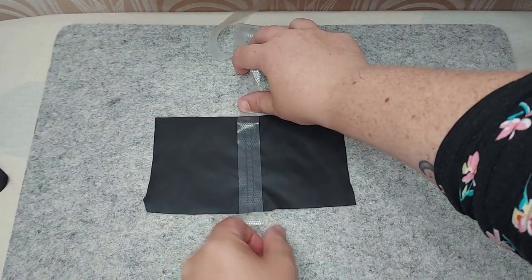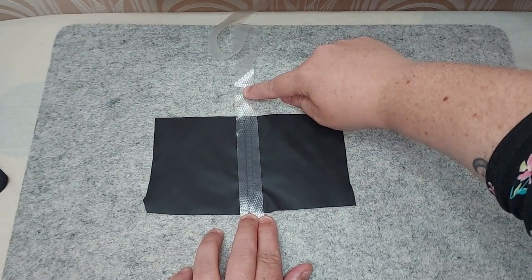Take your seam tape and check it covers both lines of stitches. Line it up and cut it to size.